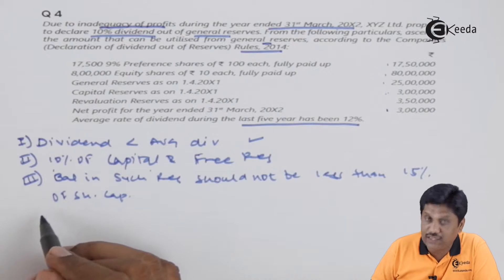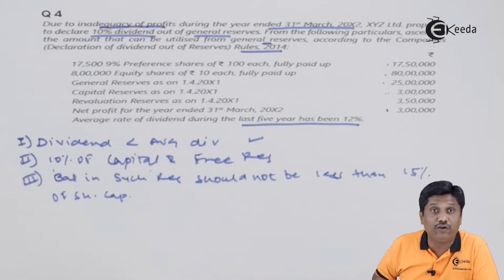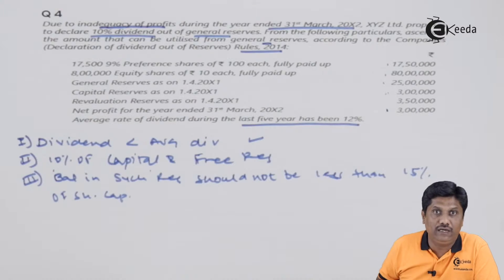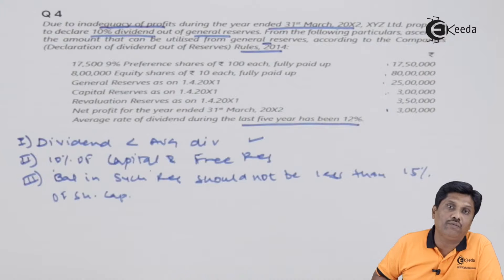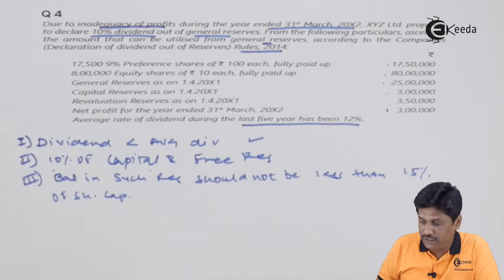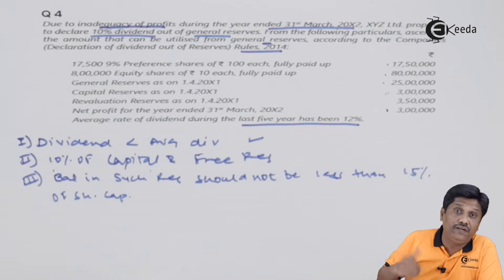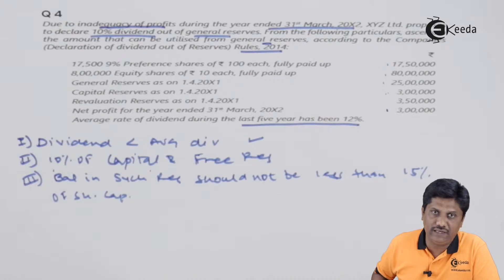तो ये तीनो rules अगर satisfy होते हैं तो उतने amount का withdrawal किया जा सकता है. Note: these are not only three rules, there are many other rules which are to be considered. तीनो rules को satisfy करना जरूरी है. तो इसका एक छोटा सा working note बनाते हैं, फिर हम लोग इसका technical aspect देख लेंगे.